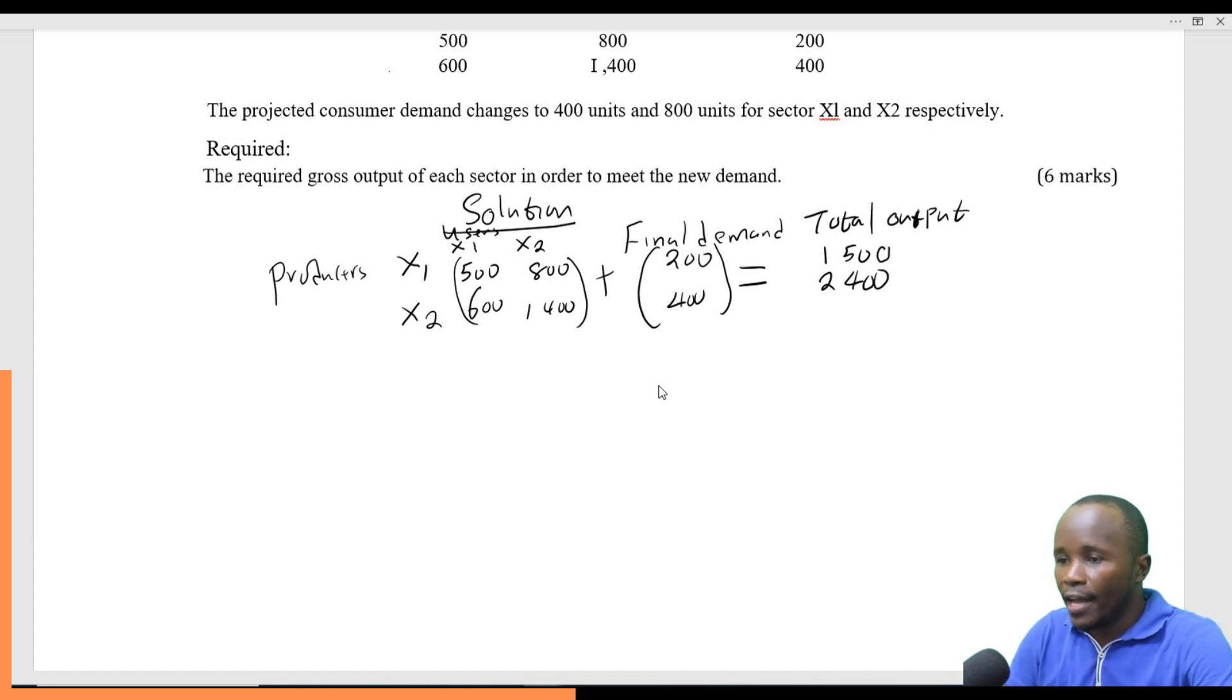This matrix we call matrix A, this matrix Y, and this matrix X. From our discussion last time, we said that when you want to get X, it is I minus A inverse multiplied by Y. So we need to get a technological matrix first.